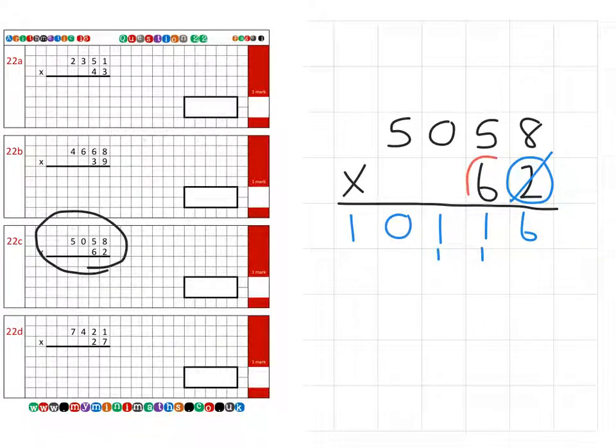Then we're going to look at the tens column. Don't forget that magic 0. 6 times 8 is 48. 6 times 5 is 30 plus the 4 is 34. 6 times 0 again is 0, so we place the 3 straight in. And 6 times 5 is 30.